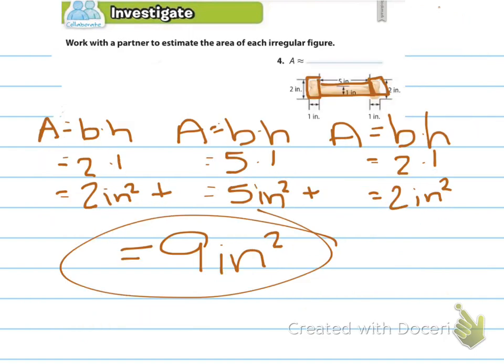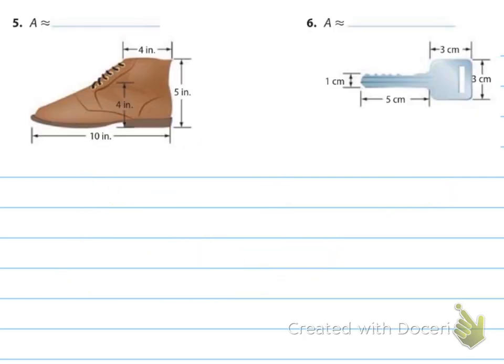Number four I thought was a lot more straightforward, so nine inches squared is what I got. I made it into three separate rectangles. Do number five and six, pause the video, and we'll come back to the answers.